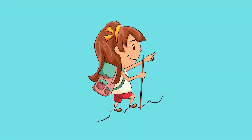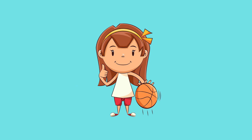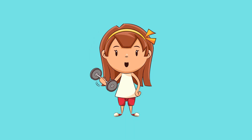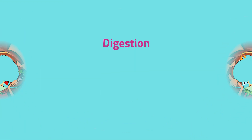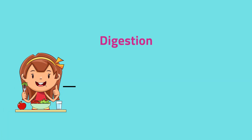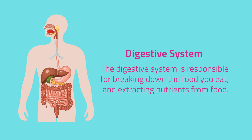Our body needs a lot of energy to enable us to do our daily activities. Such energy comes from the food that we eat. Digestion is the process by which complex food materials are converted into simpler materials that can be used by our body. The digestive system is responsible for breaking down the food you eat and extracting nutrients from food.